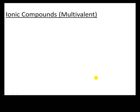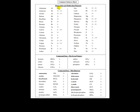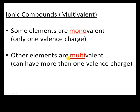This video tutorial deals with the nomenclature for ionic compounds, specifically those that involve elements with multiple valence charges. Some elements on the periodic table are monovalent, meaning they only have one valence charge. As you can see on the valence sheet, some elements only have one valence charge while others have multiple. These elements with more than one are called multivalent, meaning their valence charge depends on who they're reacting with and the situation of the chemical reaction.